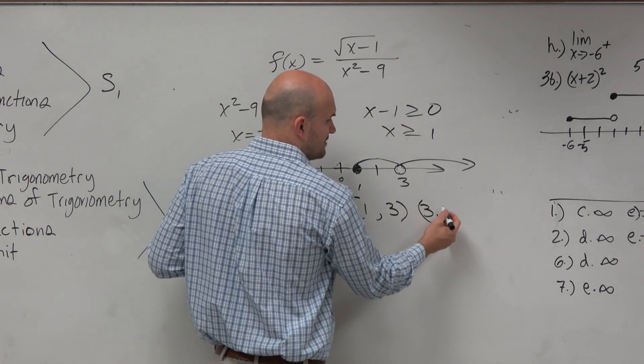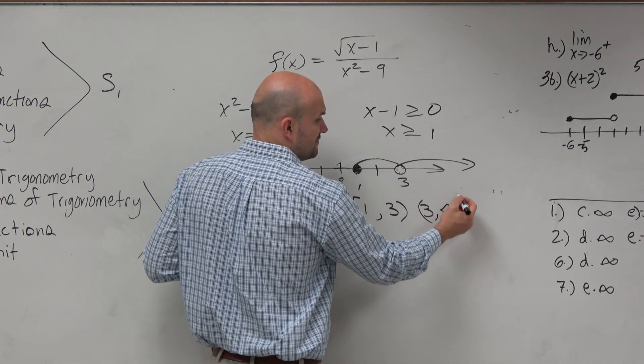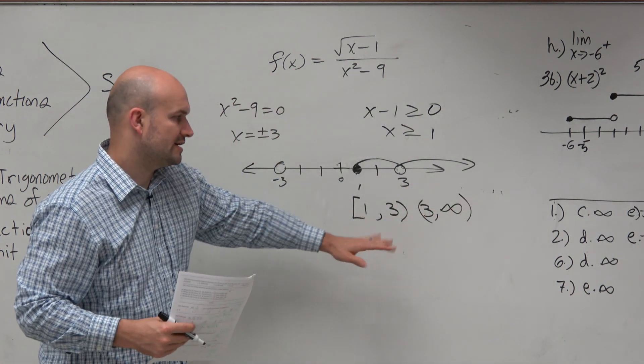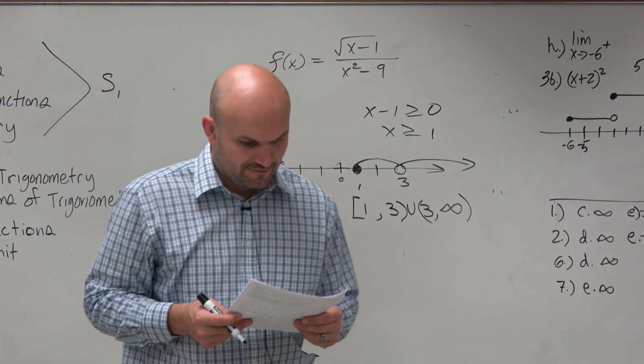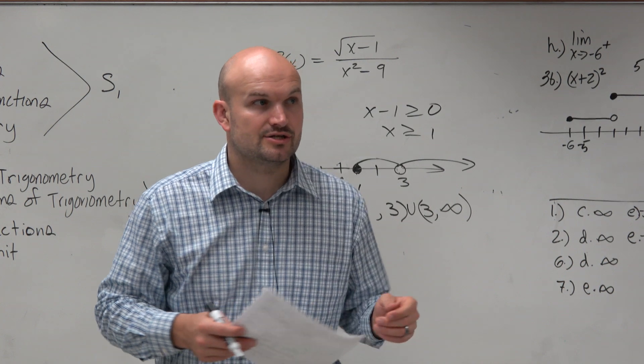That continues on with no restriction, so we say it goes to infinity. Infinity uses an open bracket. So there's your answer: [1,3) ∪ (3,∞). We use the union symbol to connect them. That is answer C.